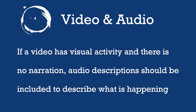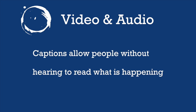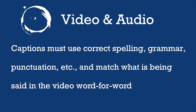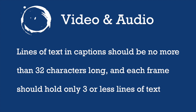There are plenty of ways to insert audio descriptions into videos to make them more accessible to people who cannot see what is happening on the screen. Captions are very important in universal design — they allow people without hearing to read what is happening in your video. Captions must use correct spelling, grammar, and punctuation, and match what is being said word for word. While some platforms offer automatic captioning, it is best to do your own captions to ensure they are 100% accurate. Lines of text in captions should be no more than 32 characters long, and each frame should hold only 3 or fewer lines of text.